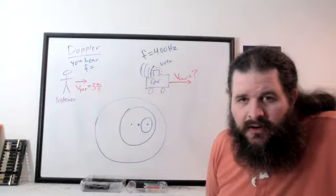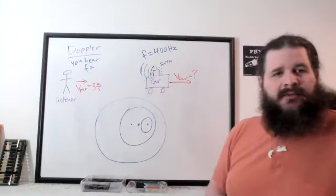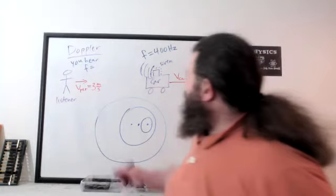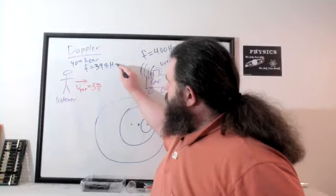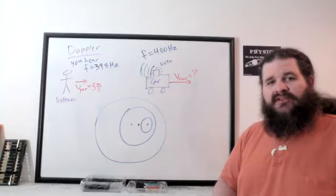If the car is moving faster than the person, that effect will presumably win out. So let's say we do hear a lower frequency overall — 398 hertz is the sound actually heard. We should be able to use this to solve for the unknown speed of the car.